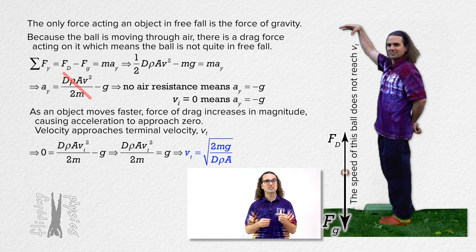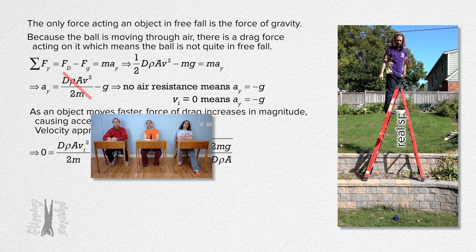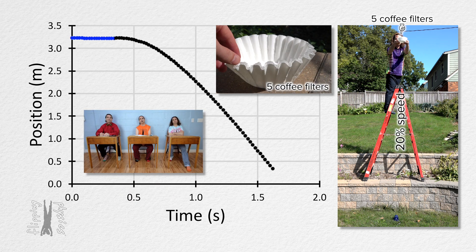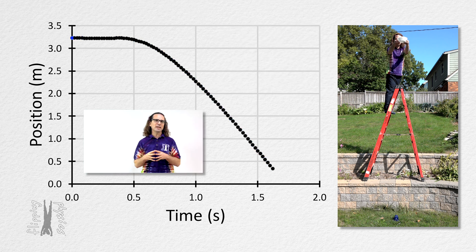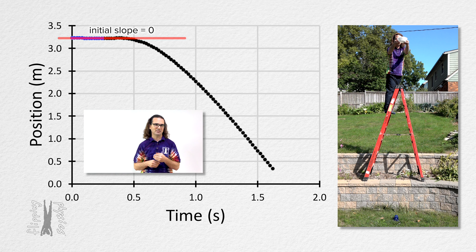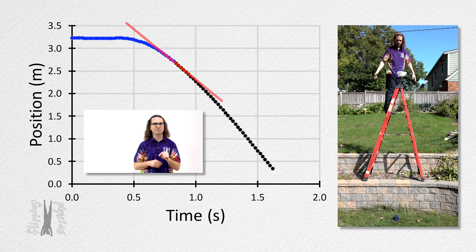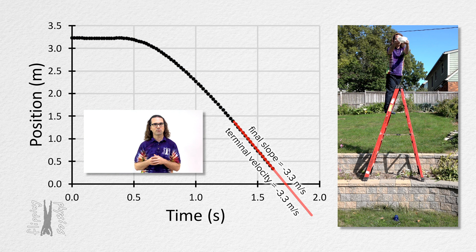Let's look at the position as a function of time of five coffee filters stacked on top of one another. Looking at the position vs. time graph, the initial slope of the best-fit line equals zero because the coffee filters are initially at rest. After the coffee filters are dropped, the best-fit line slope decreases until it reaches roughly negative 3.3 meters per second, which is the terminal velocity of the five stacked coffee filters. The velocity is negative because the filters are going down.